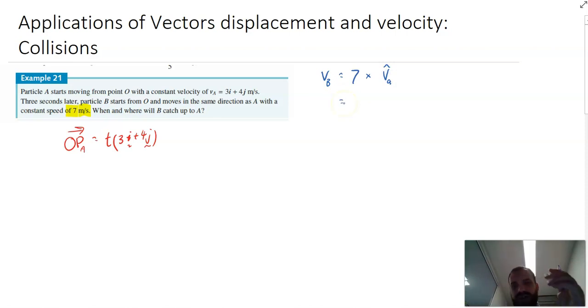Now, the unit vector, we can kind of do this in our head. 3i plus 4j. They've made it easy for us. The magnitude of 3i plus 4j is 5. So the unit vector is going to be one fifth of 3i plus 4j.